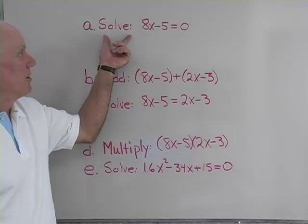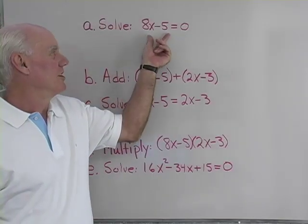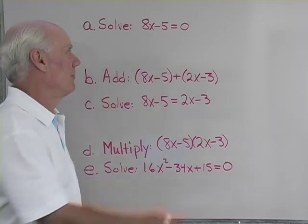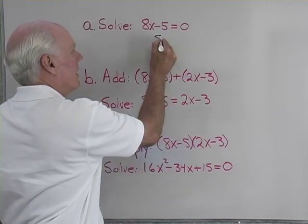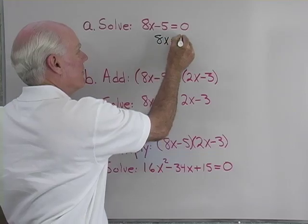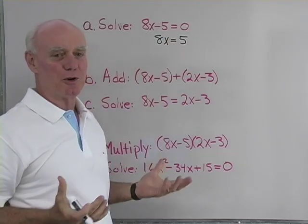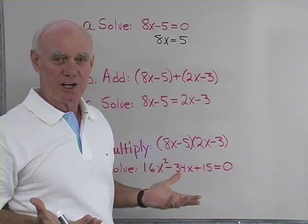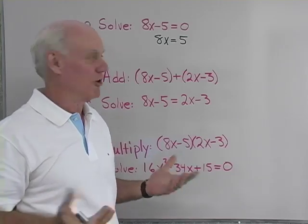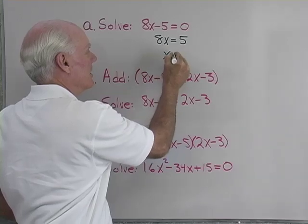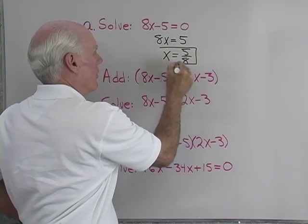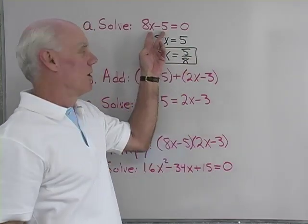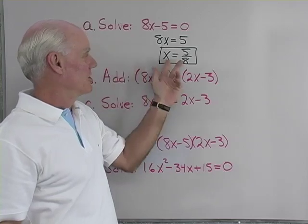Our first problem here, we want to solve the equation 8x minus 5 equals 0. I'll add 5 to each side using the addition property of equality. 8x is equal to 5. Then I'll divide both sides by 8, and I end up with x is equal to 5 eighths. So there's a linear equation in one variable, and I solve that equation to get my solution.